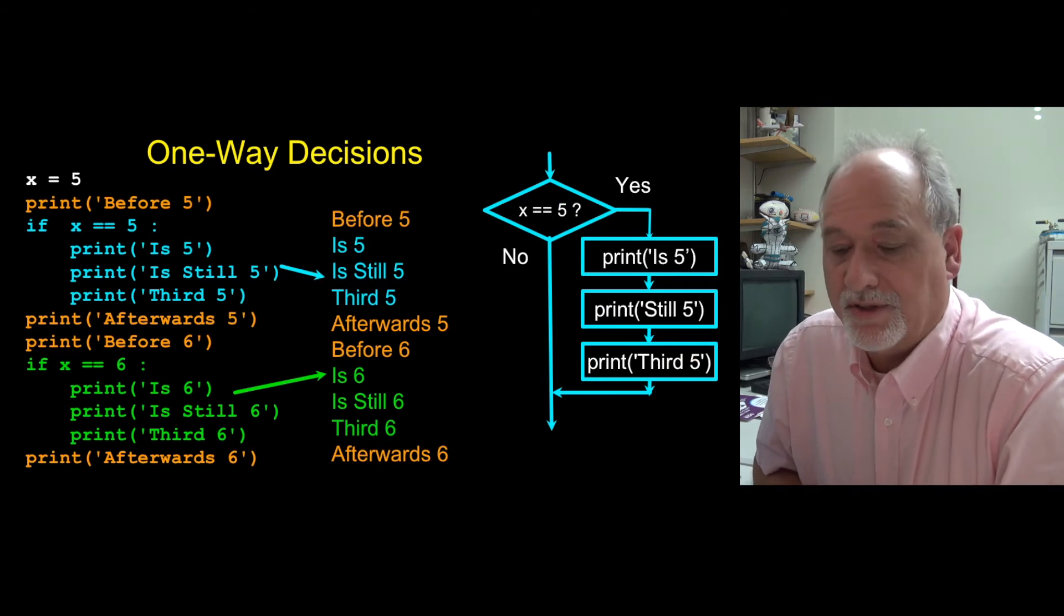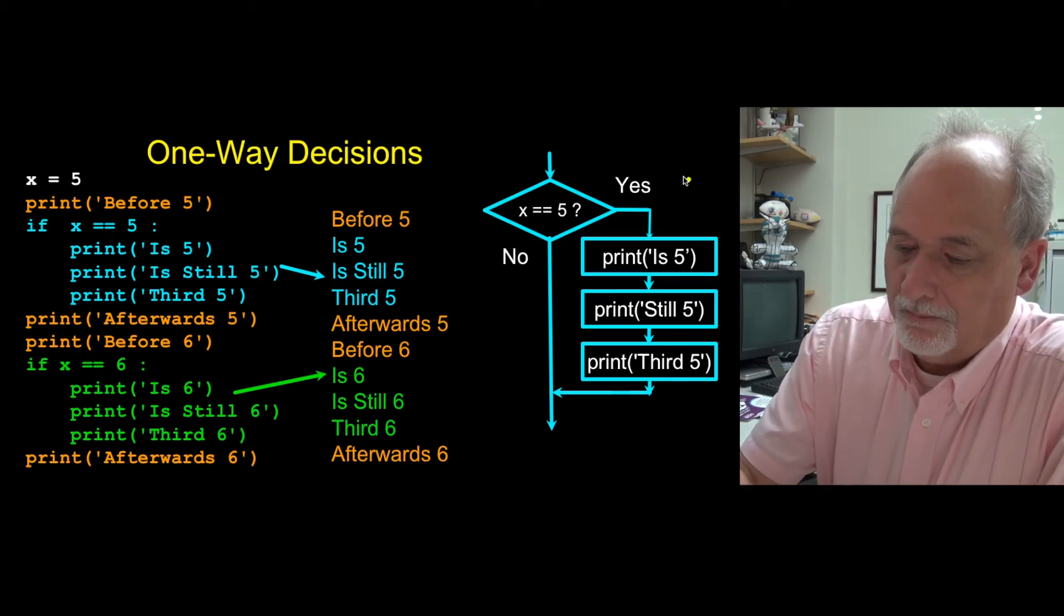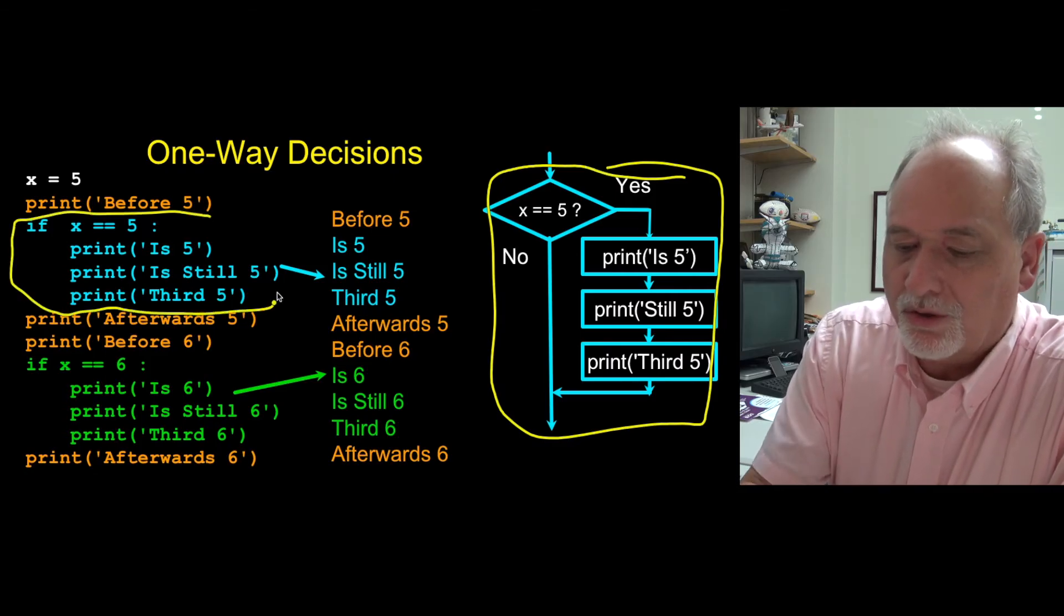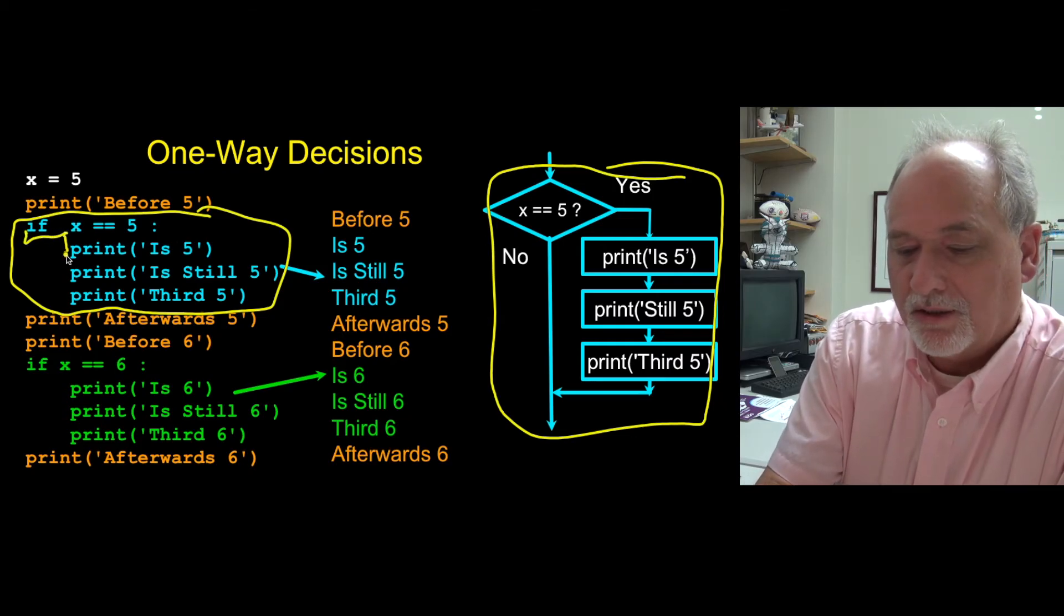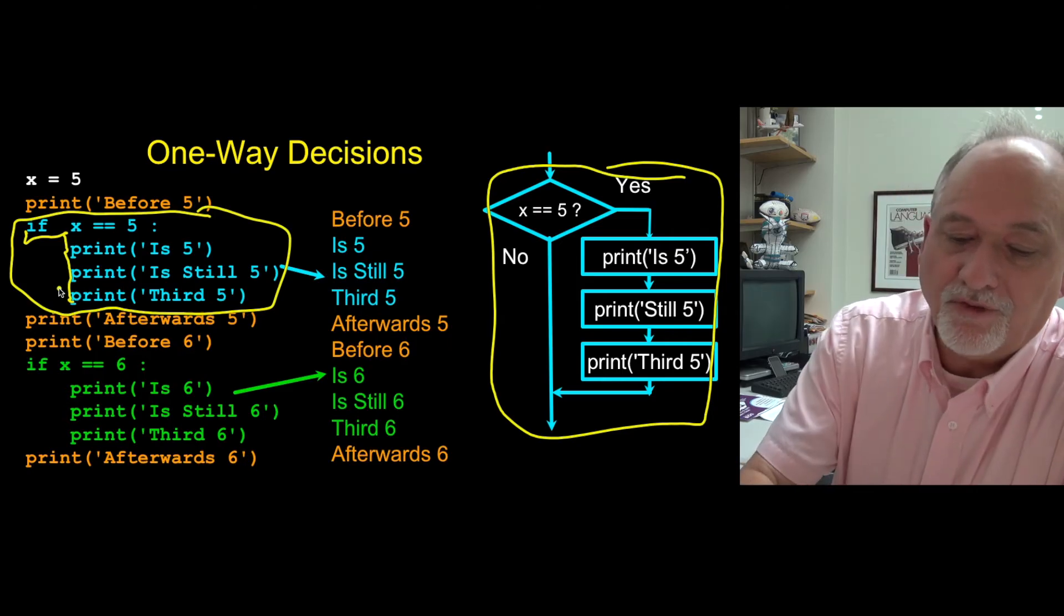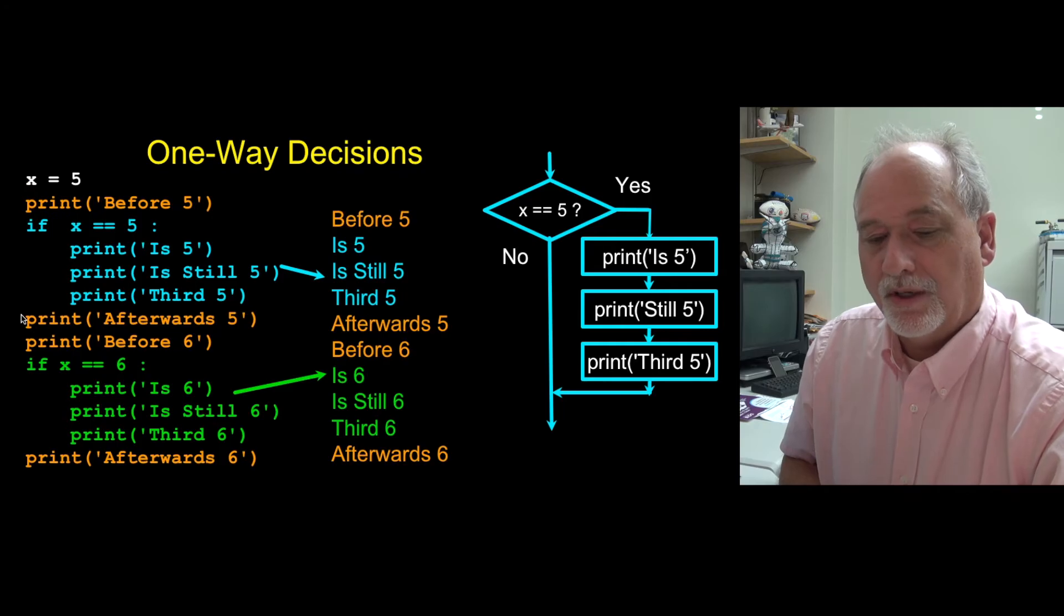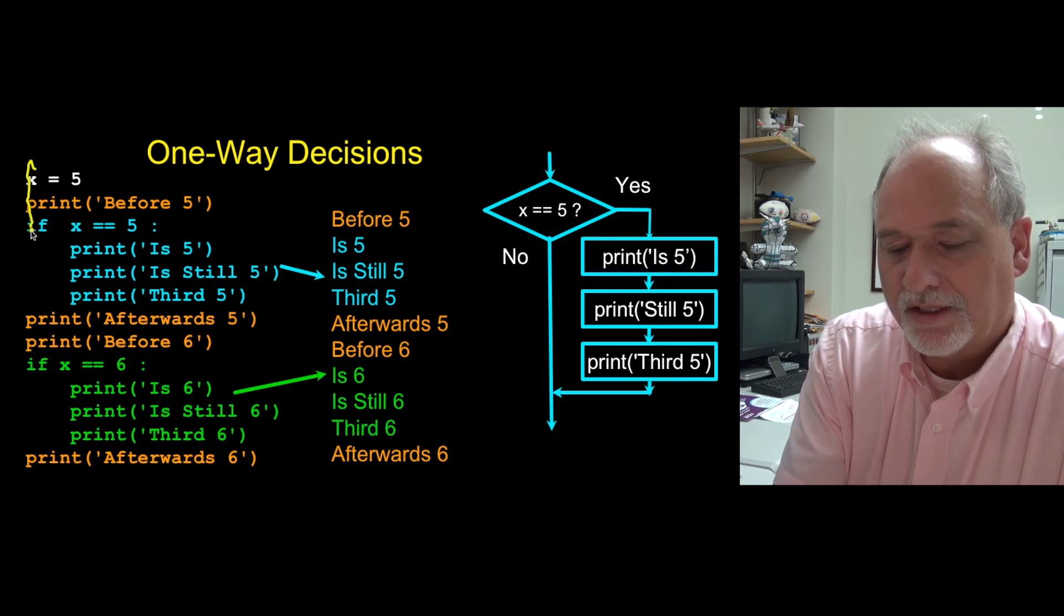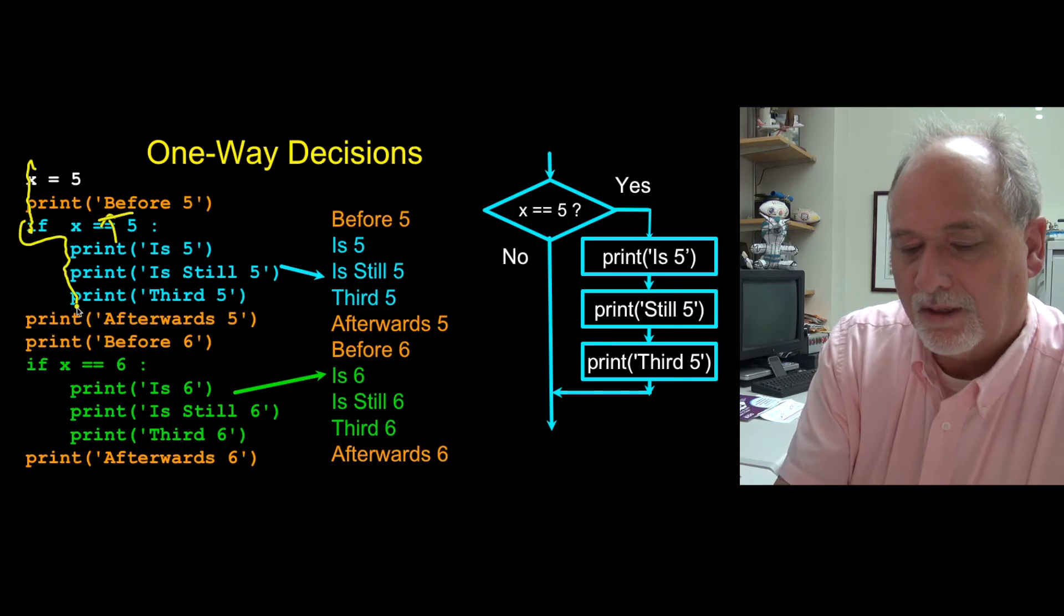You don't just have to have a single line of text in the indented block. So if we indent more than one line, then the conditional code is actually these three lines. You have an if statement, you come in, you do an indent, and as long as you stay indented you stay in that if block. If it's false, it just skips all of those. So the way this is going to execute, x is 5, print before 5, is x equal 5, that's the question mark and that's true.